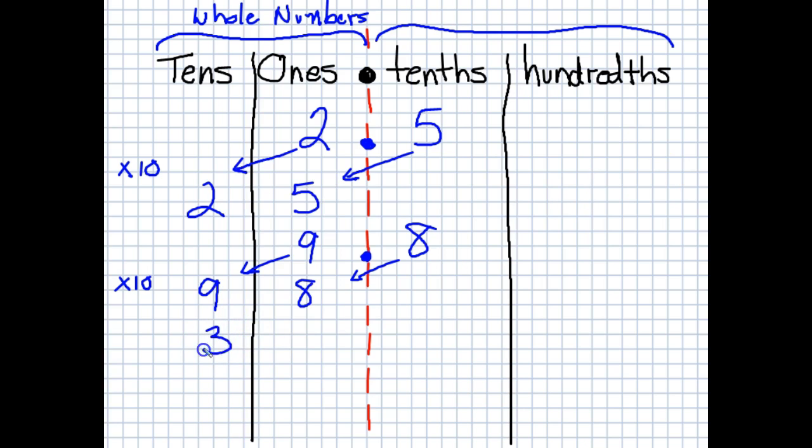Again, we multiply by 10 and these digits will slide over to the next column.